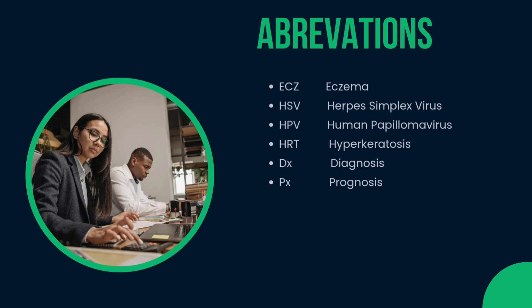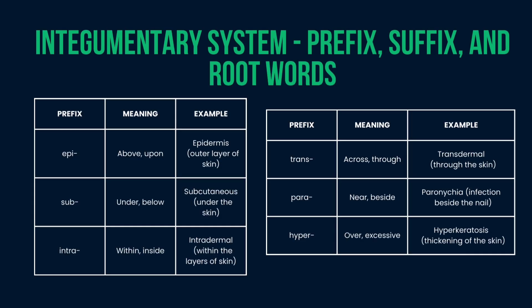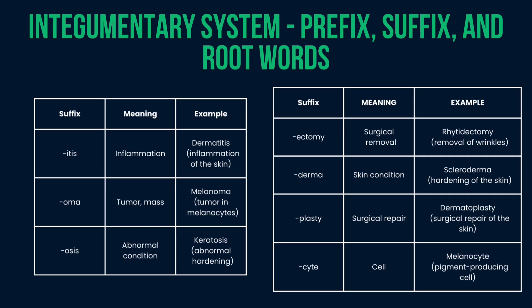Next we will see prefixes. Epi- means above — example: epidermis. Sub- means under or low — example: subcutaneous. Intra- means within — example: intradermal. Trans- means across or through — example: transdermal. Para- means near or beside — example: parenchyma. Hyper- means over or excessive — example: hyperkeratosis.